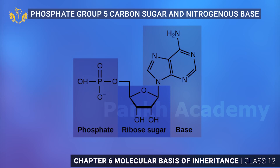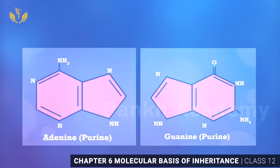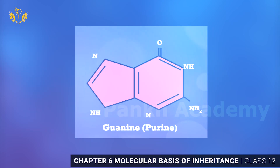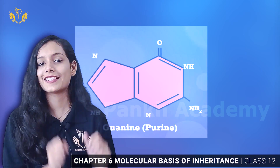Now let's talk about nitrogenous bases — Purine and Pyrimidine. You need to know their structures. For Purine, let's draw adenine. In adenine you can see NH2, N, then N, then NH, and N. This is adenine. Now let's talk about guanine — in guanine you can see O, NH, NH2, N, NH, and N. This structure you also have to remember. Adenine and guanine are within Purine.